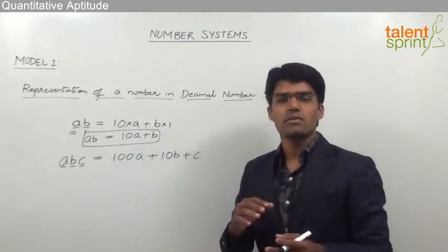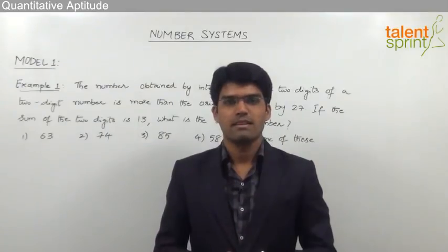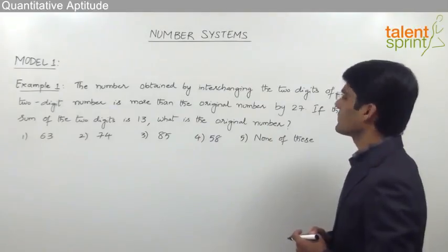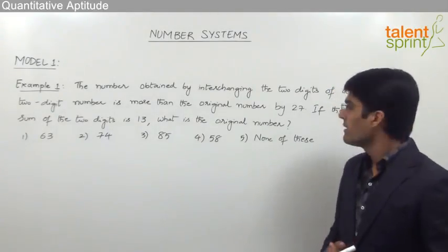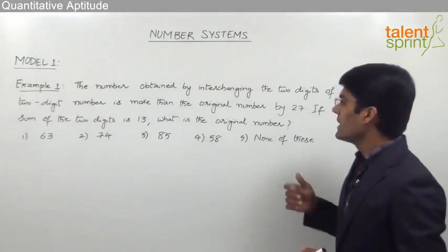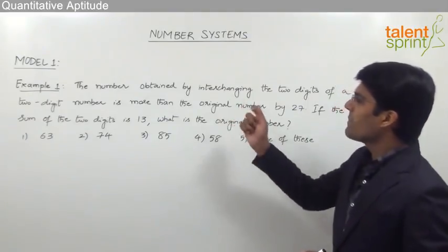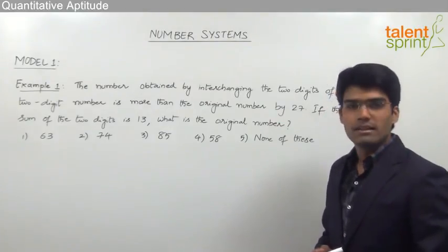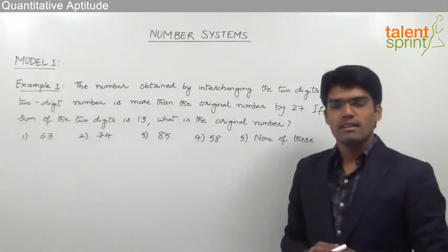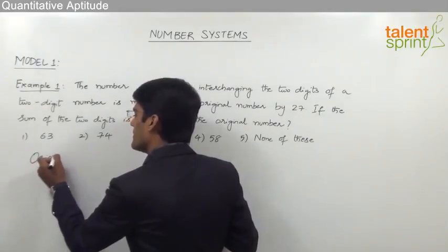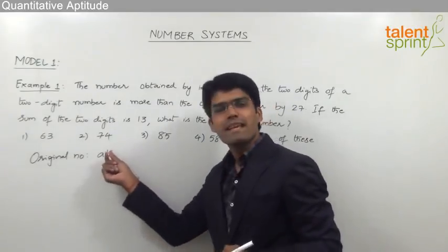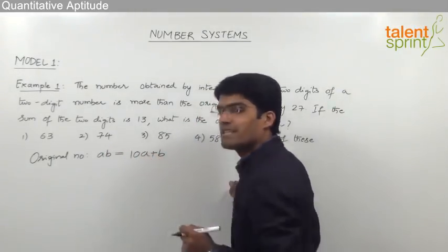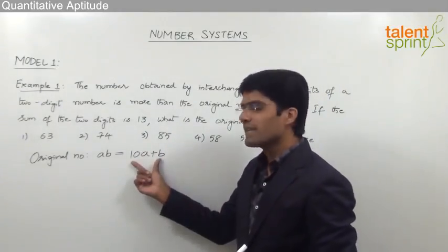With this foundation, let us see how to solve questions related to interchanging of digits. Example 1: The number obtained by interchanging the two digits of a two-digit number is more than the original number by 27. If the sum of the two digits is 13, what is the original number? Let us assume the original two-digit number is AB, where B is the units place and A is the tens place, so the original number is 10A plus B.